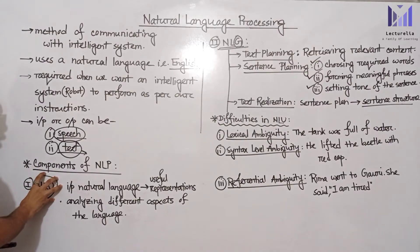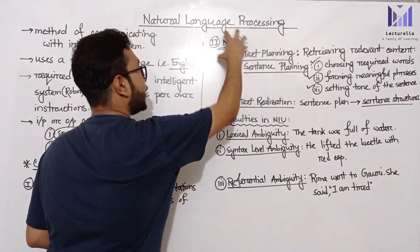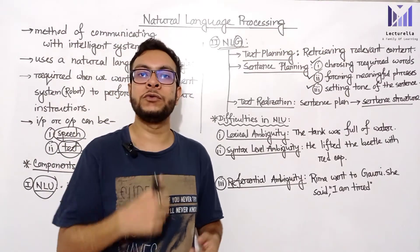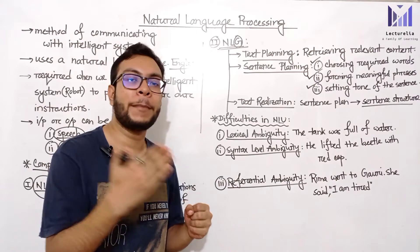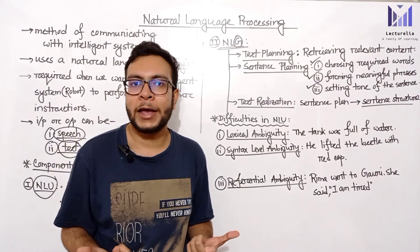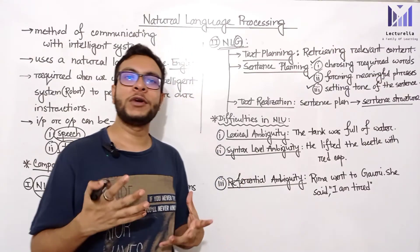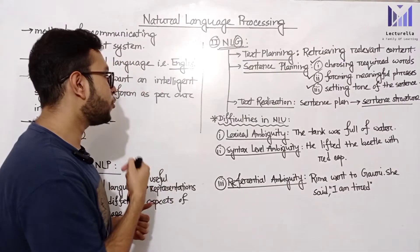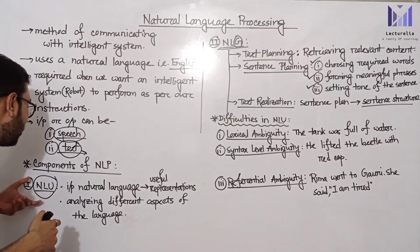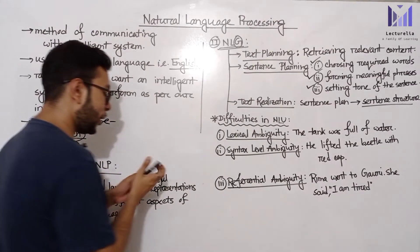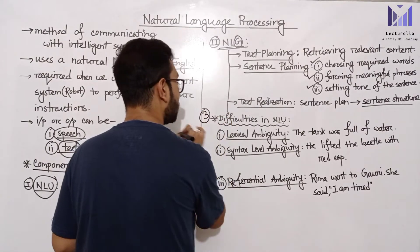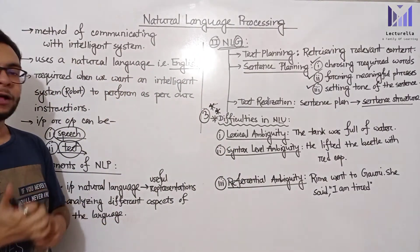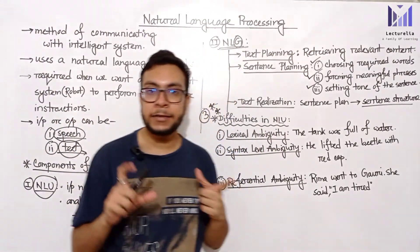Natural Language Understanding is difficult because human language is complex. An AI agent or robot must understand human language, which is one of the most important and frequently examined topics. One key difficulty in NLU is ambiguity. The first type is lexical ambiguity, which occurs at the word level — a single word can have multiple meanings.